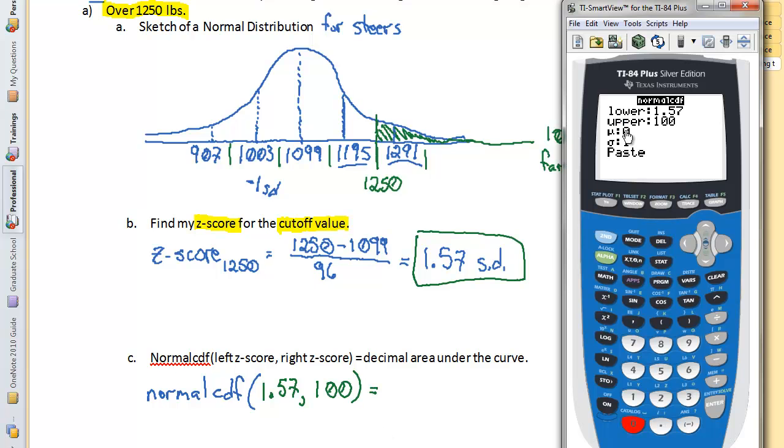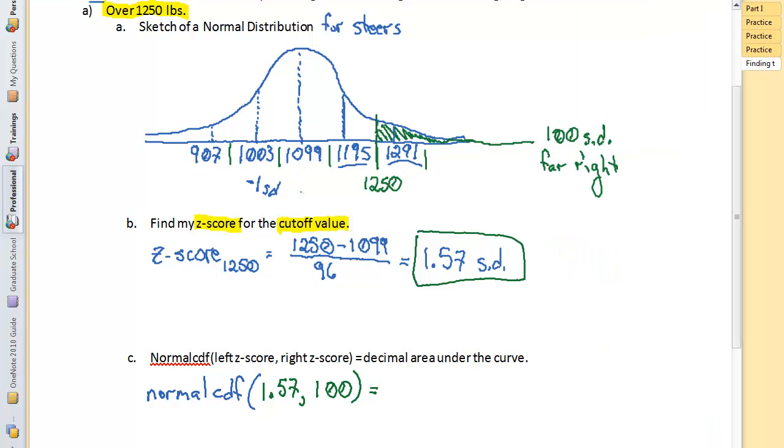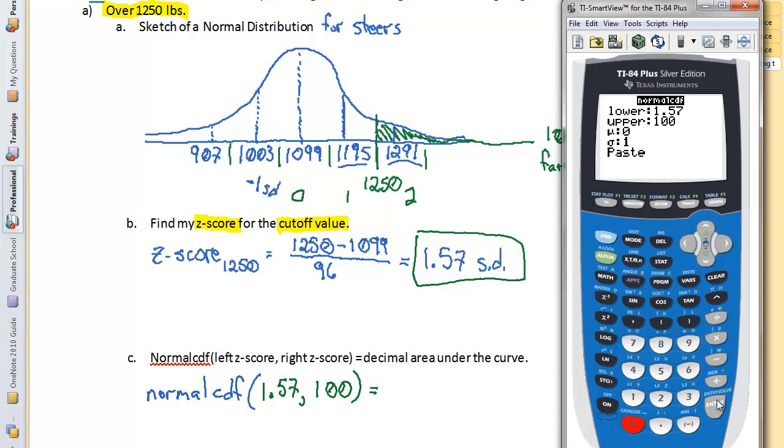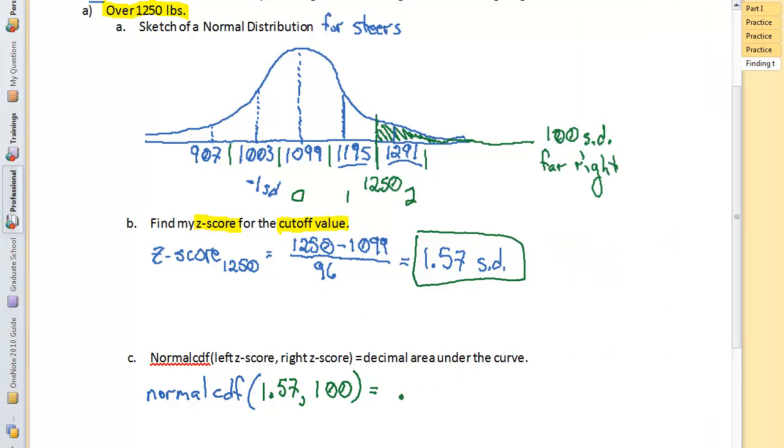That's going to give me a decimal answer. The mu is going to be 0, because 0 is in the middle of my normal distribution, and each standard deviation is 1. So I hit enter, enter, and paste it in, and hit enter again until you get this nice decimal: 0.058. If I convert that to a percentage, I'm going to move the decimal over two places, and that's 5.8%.